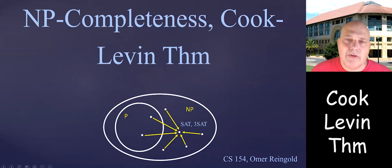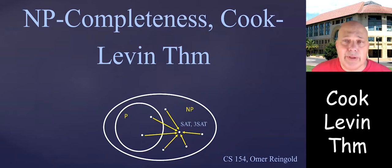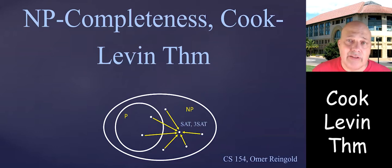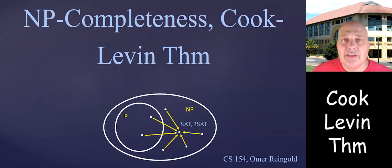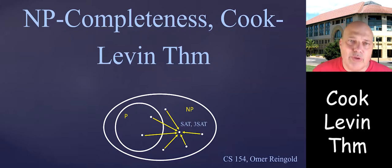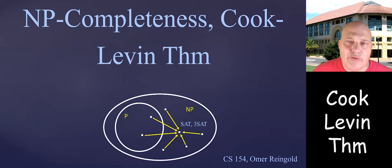Hello everybody. So far in our study of time complexity, we have defined it, studied basic properties like the time hierarchy theorem, looked at robustness to different models of computation, considered the extended Church-Turing thesis, and defined P, which is a robust class of polynomial time computations — every language decidable by polynomial time computation. And we defined NP, the analog for non-deterministic computation.